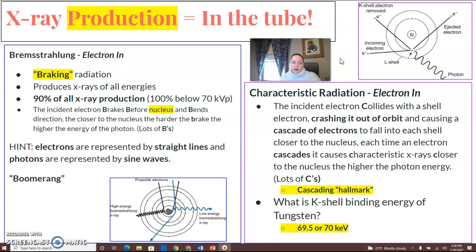So bremsstrahlung is going to be an electron in, photon out. Anytime you see the term breaking radiation or slowing down, you're going to be bremsstrahlung all the way. It produces X-rays of all energies. It produces 90% of all X-ray production.